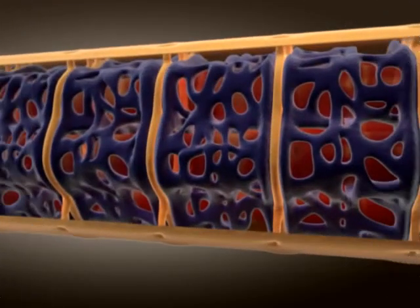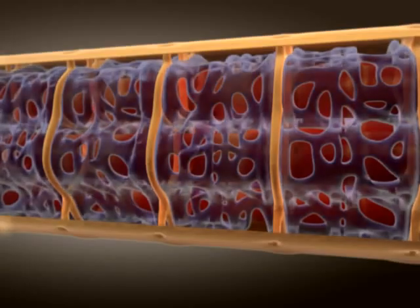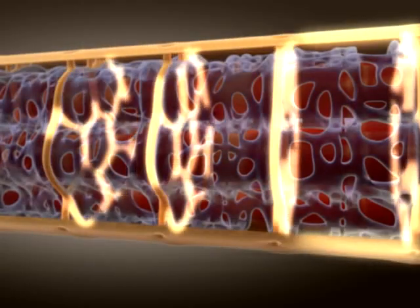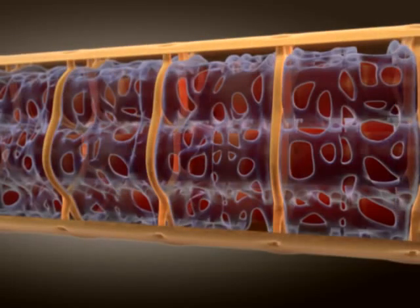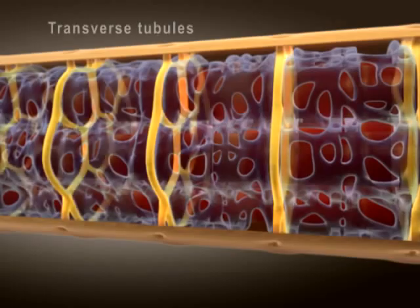If we look at a single muscle fiber, we see that an action potential travels across the entire sarcolemma and is rapidly conducted into the interior of the muscle fiber by structures called transverse tubules.